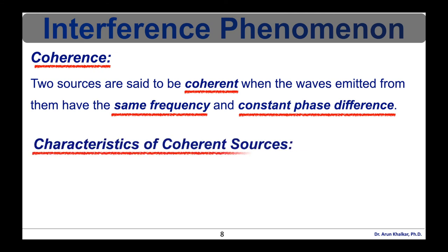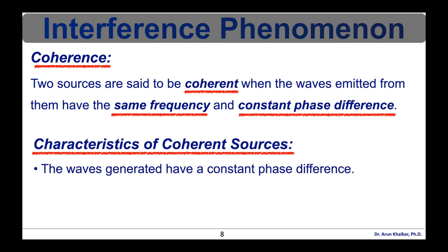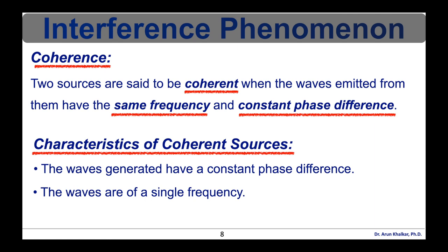Coherent sources have the following characteristics: the waves generated have a constant phase difference, and the waves are of a single frequency. For example, laser light is a coherent source of light — the light emitted by a laser has the same frequency and phase. Sound waves are another example of coherent sources, where the electrical signals from the sound waves travel with the same frequency and phase.